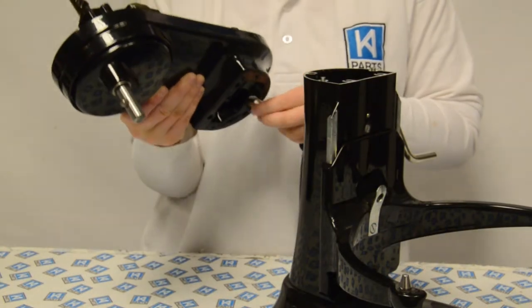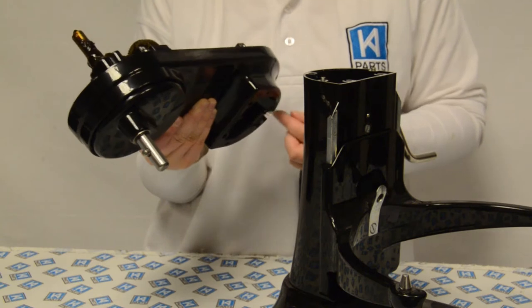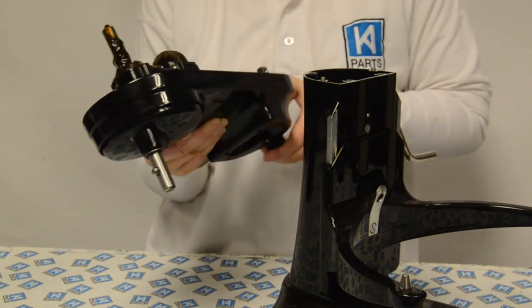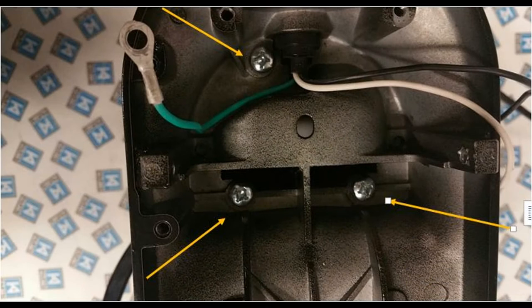Slot the new power cord into place. Place the lower housing back on the base and replace the three screws.